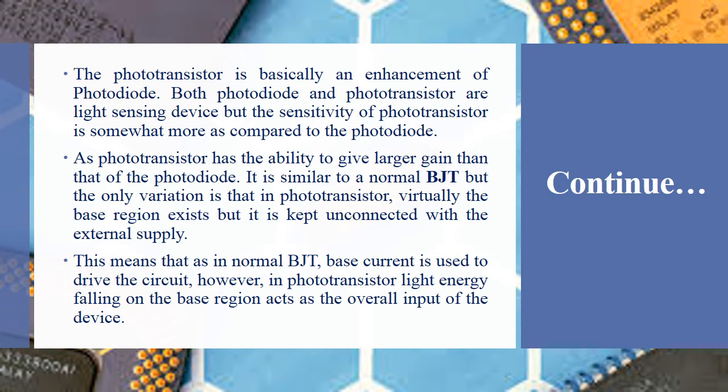A phototransistor has the ability to give larger gain than that of a photo diode. It is similar to a normal bipolar junction transistor (BJT), but the only variation between the phototransistor and the normal BJT is that the base region in the phototransistor is virtually disconnected from the external supply.